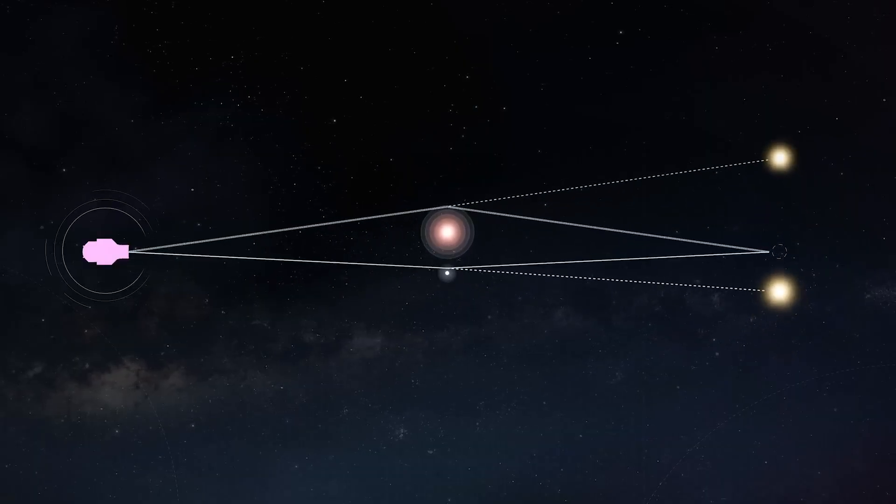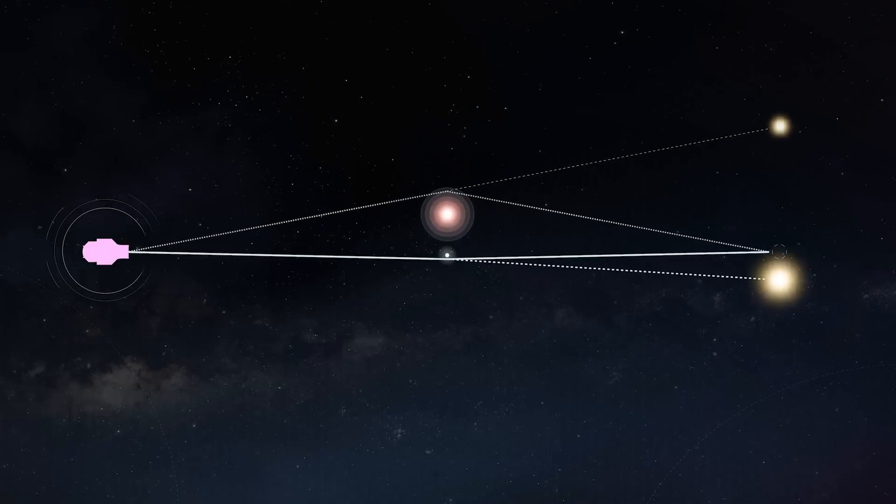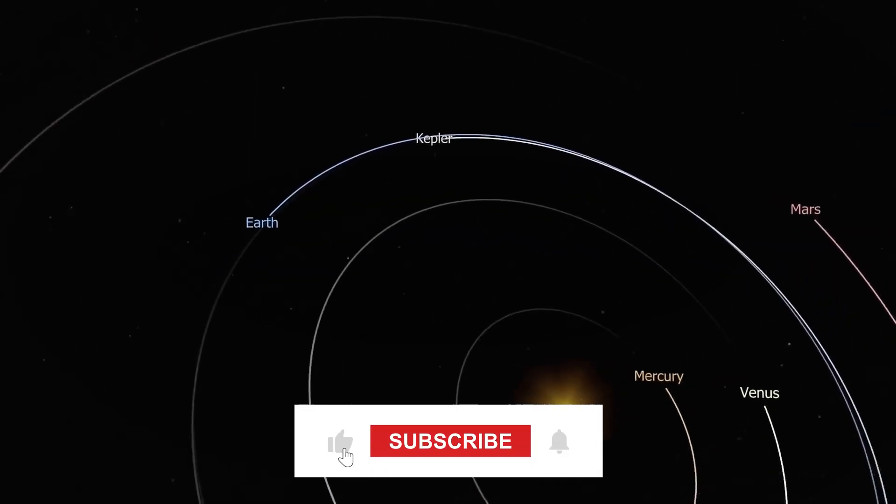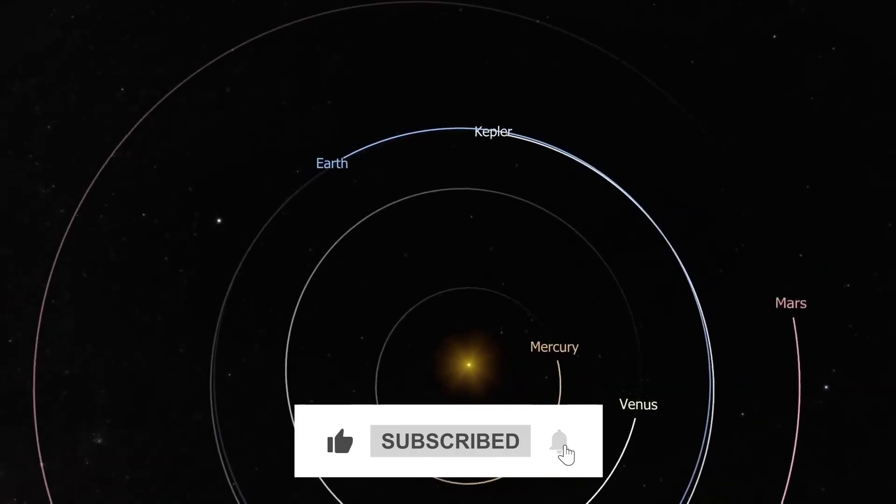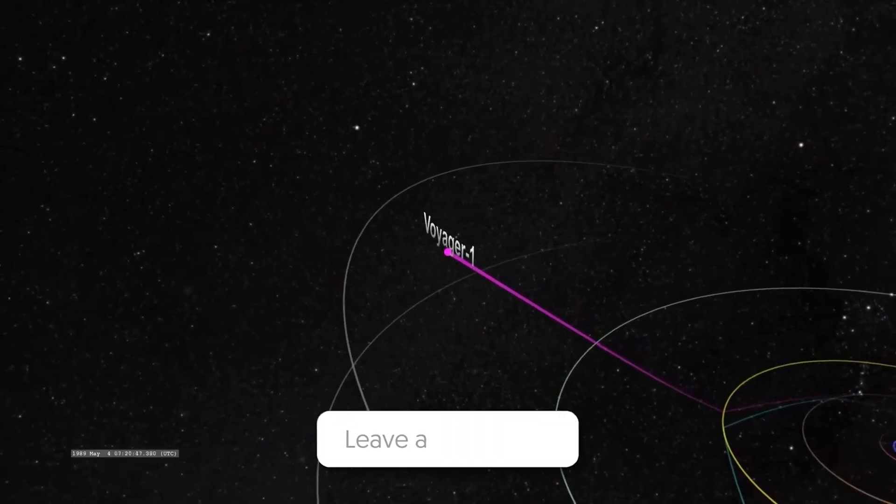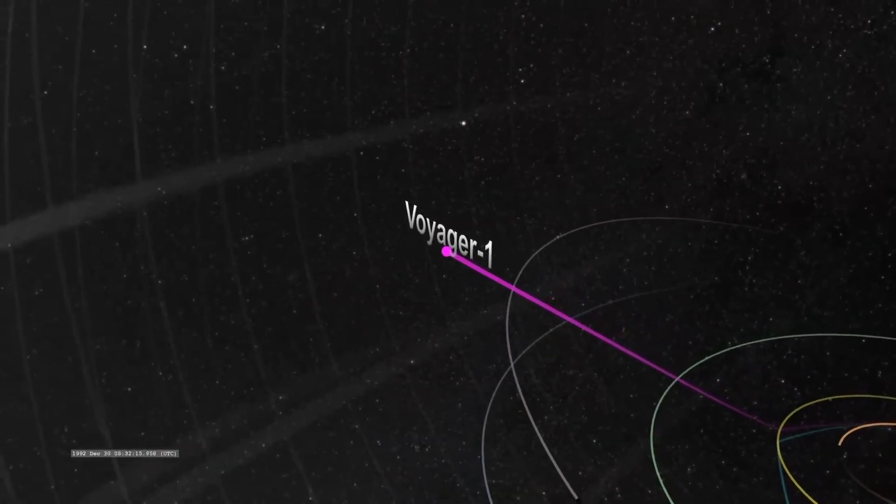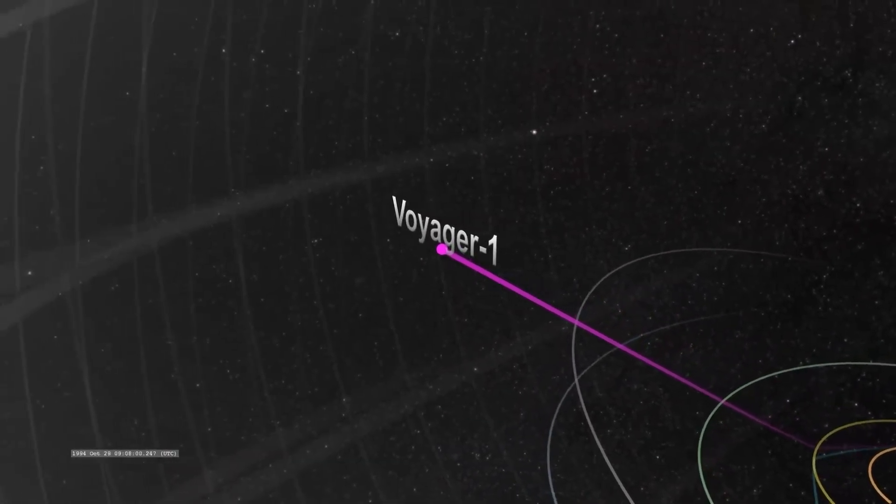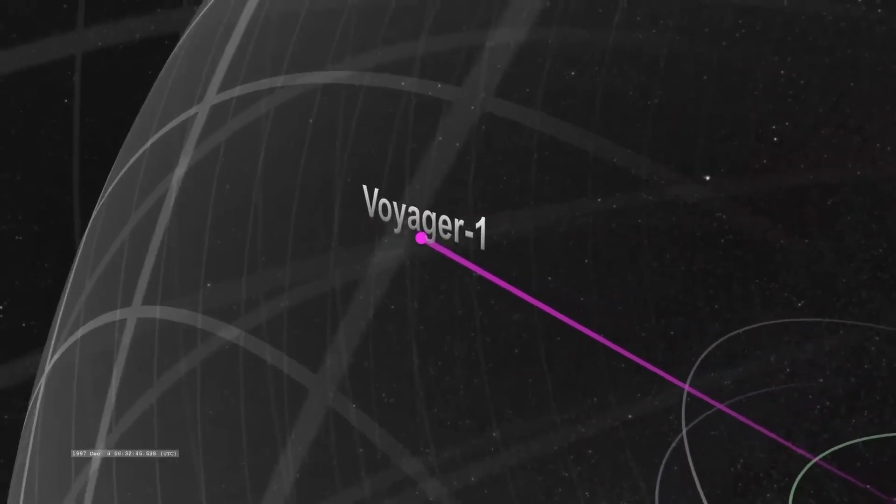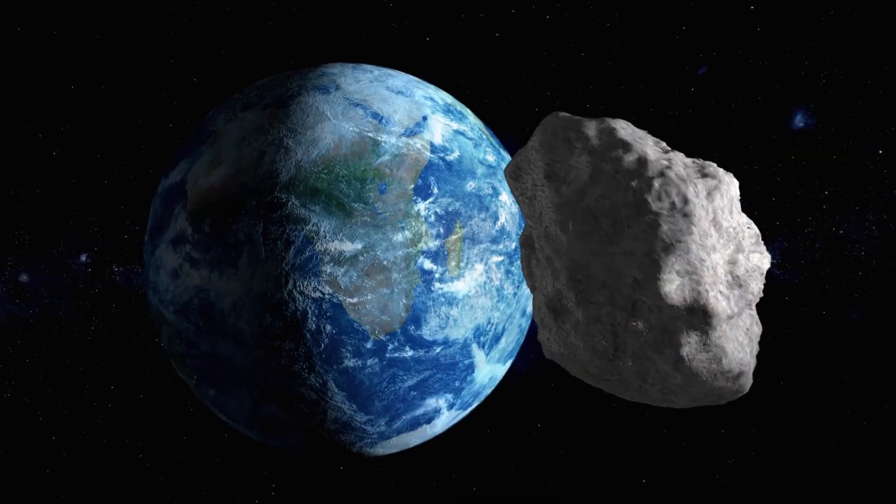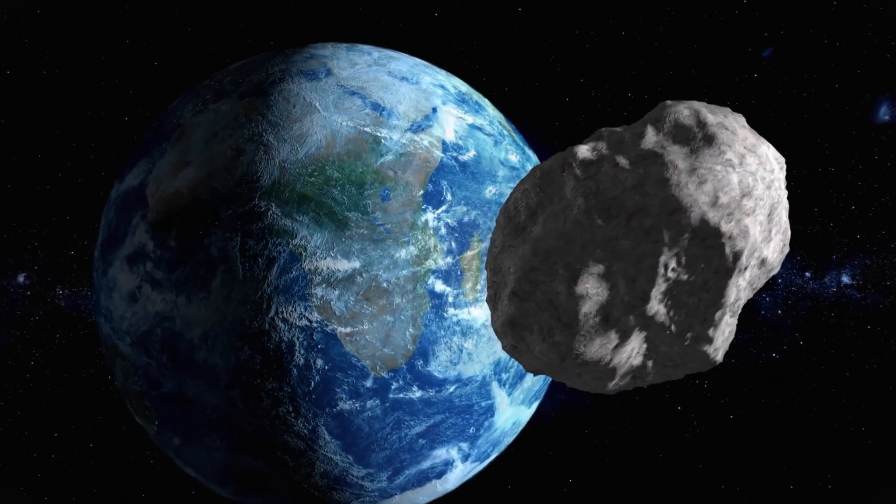If this journey through the cosmic structures surrounding our solar system amazed you as much as it did me, smash that like button and subscribe for more mind-blowing space discoveries. Drop a comment below and tell me which of these cosmic phenomena surprised you the most. The gamma ray bubbles, the dark matter streams, or maybe those primordial black holes. And if you know someone who loves space as much as you do, share this video with them, because everyone deserves to know just how incredible our cosmic neighborhood really is.